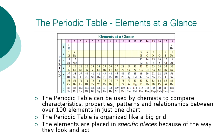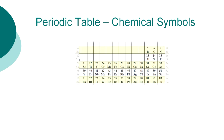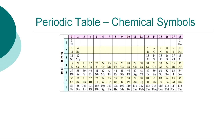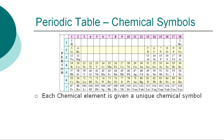An element is usually a solid, liquid, or gas, and has many other characteristics and properties. The Periodic Table is arranged so that elements containing common characteristics are grouped together. Each element in the Periodic Table has been abbreviated and given a symbol. They are collectively called Periodic Symbols.